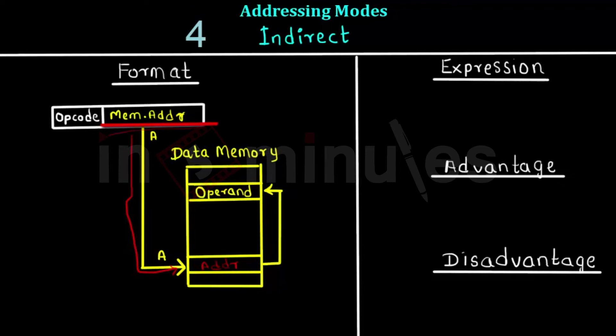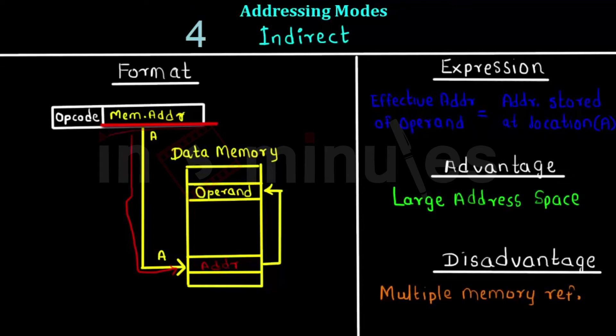This address is then used to fetch the operand from the same memory — that is indirect addressing. The effective address is the address stored at the location given by the address specified in the operand field. The advantage of this system is that a large address space is provided, since the size of the data memory decides the address space.